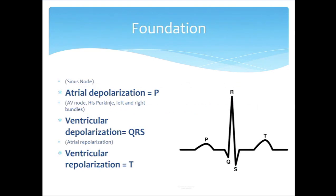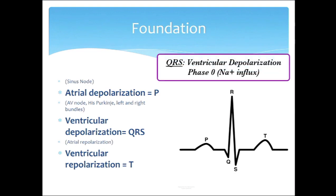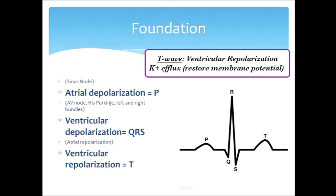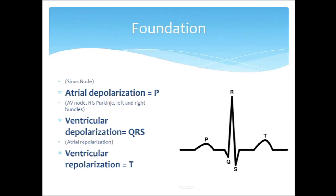Hopefully by now this is somewhat second nature. A standard cardiac cycle, when depicted electrically, involves the P wave, which represents atrial depolarization; the QRS complex, which is the large ventricular depolarization; and then the T wave, which represents ventricular repolarization. We don't get to see electrically the atrial repolarization process because it's small and buried within the QRS complex.